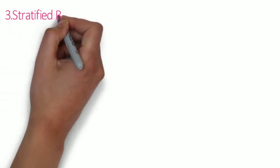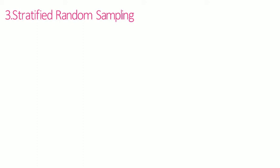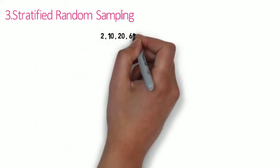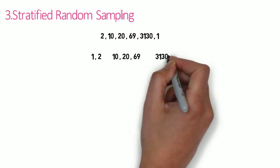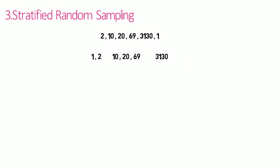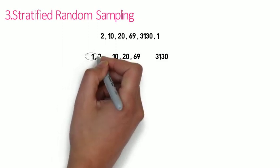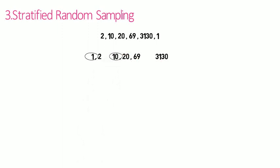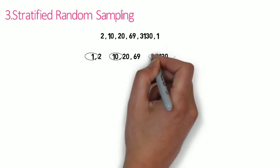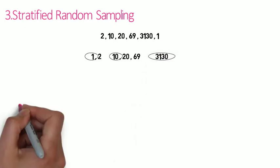Next, stratified random sampling. Here the sample is drawn from each stratum at random in proportion to its size, giving a more representative sample. For example, suppose we divide the population into three groups: those with one digit, two digits, and three digits. From each group we select one representative value. This is stratified random sampling.